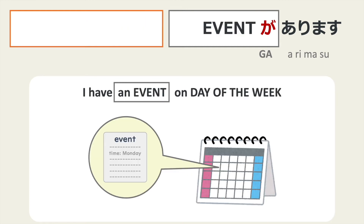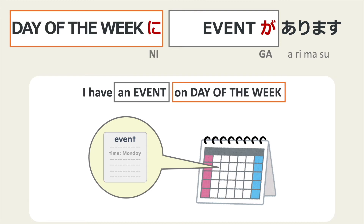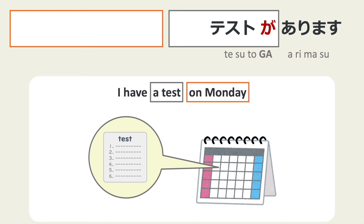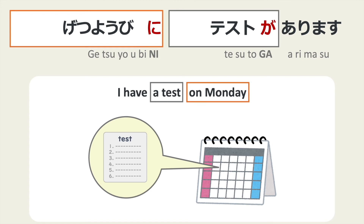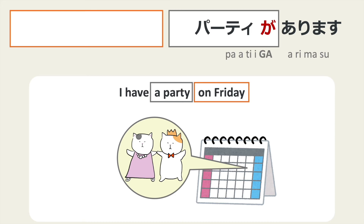Now, if you want to say you have an event on a certain day of the week, we can use the に particle for days of the week too: day of the week に イベントが あります。 'I have a test on Monday': 月曜日に テストが あります。 'I have a party on Friday': 金曜日に パーティーが あります。